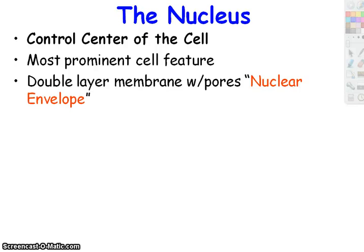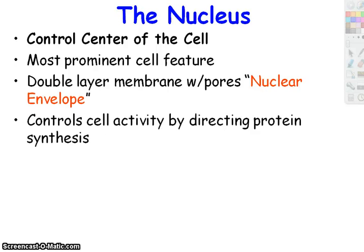When you first learn about the nucleus, you're taught it's the control center — it tells the cell what to do. That's not exactly true. It's not telling the mitochondria or the cell membrane what to do directly. What it does is control what proteins are made. Since proteins are the enzymes, hormones, and structures of the cell, by controlling protein production, the nucleus determines the main functions of that cell type — but it's not the boss directing all other organelles.